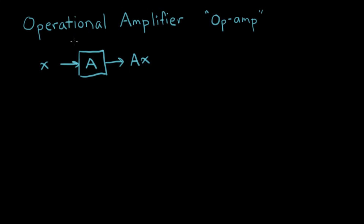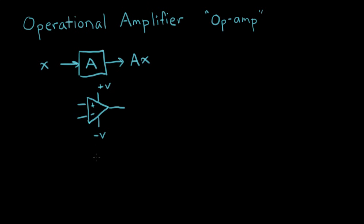When we talk specifically about an operational amplifier, the symbol we use is a triangle, and it has two inputs — one is the plus input, one is the minus input — and it has an output. It also has two power supplies: there's some sort of plus voltage that goes into it, and some sort of minus voltage. So this is the abstract symbol for an op amp.